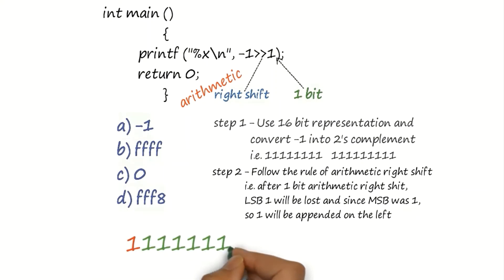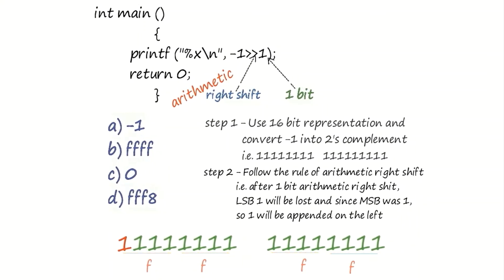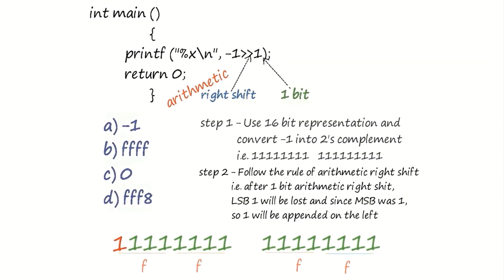Since hexadecimal number representation needs 4 bits, the 16-bit number is scanned from right to left by 4 bits and results in F, F, F, F, and F.